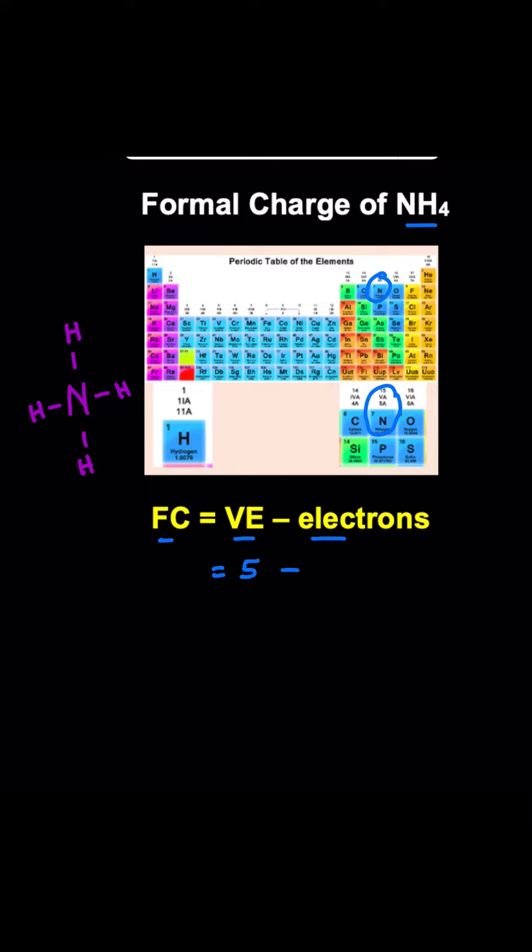Minus the number of electrons around nitrogen. If you look at this structure here, nitrogen does not have any electron pairs, but it has four bonds, one bond to each hydrogen.